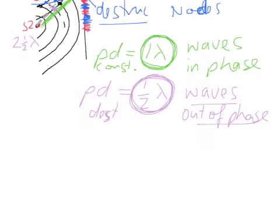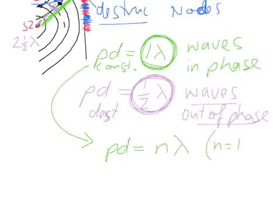When you're considering constructive interference, path difference is always going to be a whole number of wavelengths. That's where n is 1, 2, 3 and so forth - all your whole numbers.